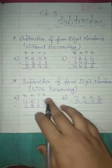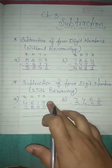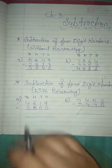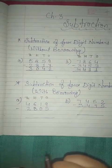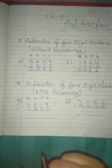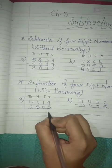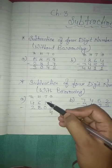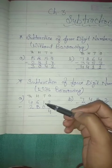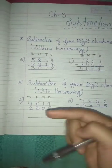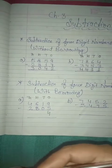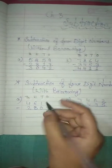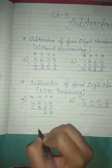Then solve the sums. 9 minus 5 — tell me, how much? Correct, 9 minus 5 is equal to 4. So write down here 4. And next number is 1 minus 0 — you have 1 and you gave none, so how much do you have? 1. So write down here 1.